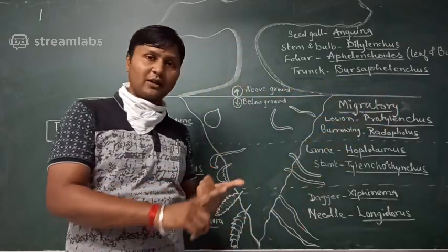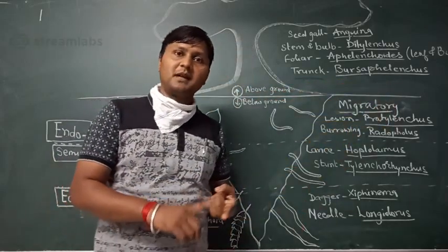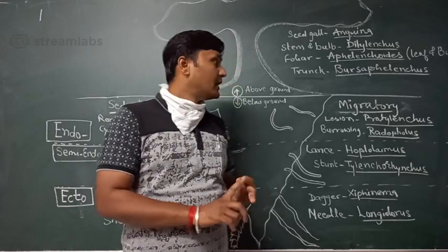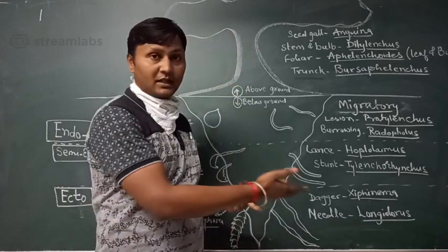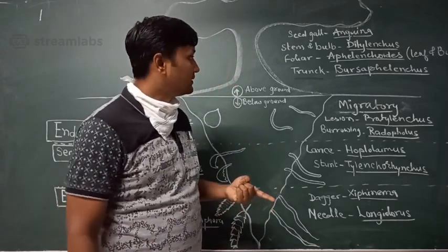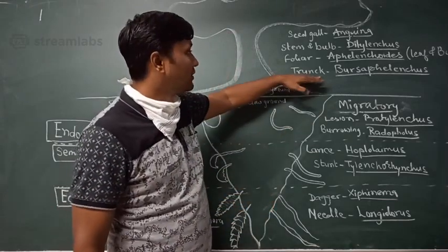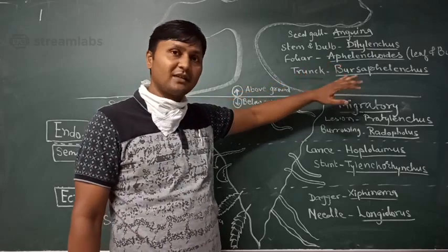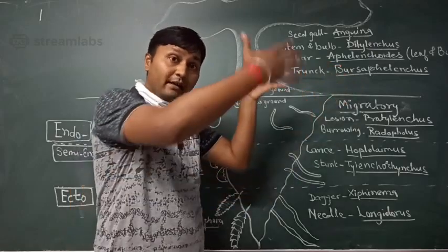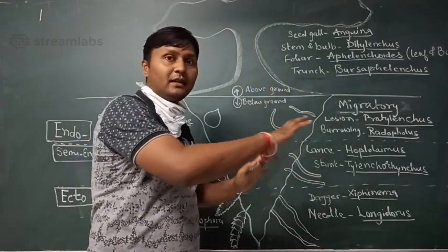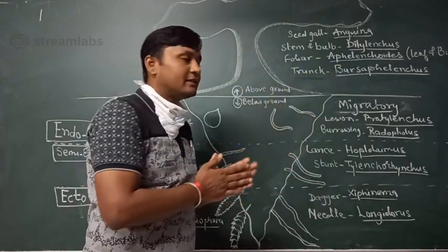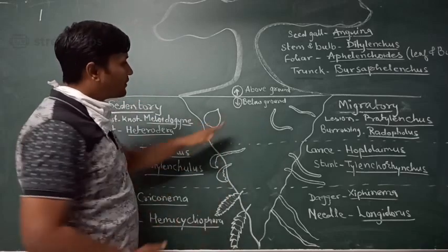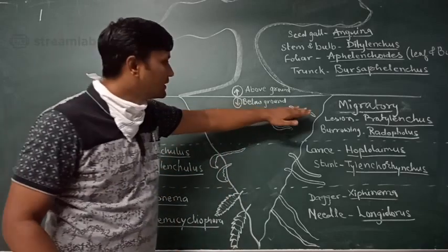The trunk nematodes are Bursaphelenchus, with two species: Bursaphelenchus xylophilus and Bursaphelenchus cocophilus. Both species feed on the trunk of the plant. This concludes the above ground feeder nematodes, and we now move to below ground feeder nematodes.